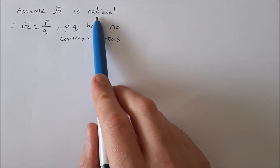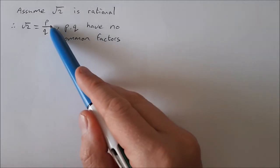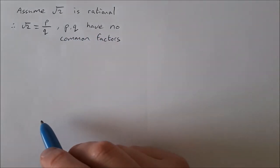So to start off we assume that it is in fact a rational number. Well, for root 2 to be rational, rational means it can be written as a fraction p over q where p and q have no common factors.